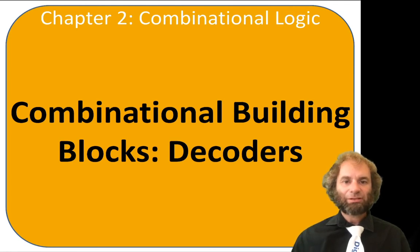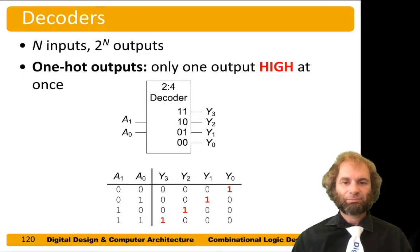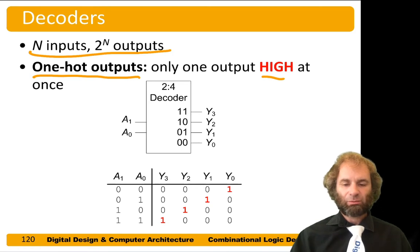Hello, the topic of this video is combinational building blocks and in particular decoders. So decoders are another handy combinational circuit. They're a block with n inputs and 2 to the n outputs that assert exactly one of those outputs high at any given time. So we choose one of the 2 to the n possibilities.